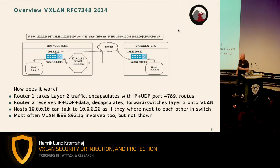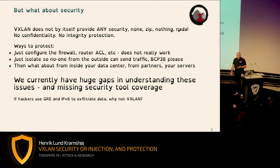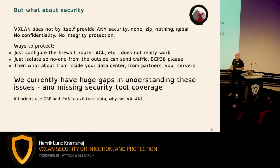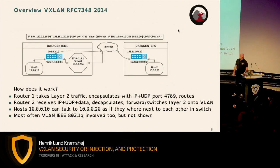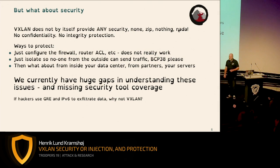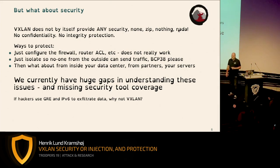What about security? VXLAN encapsulates in UDP. The worst thing about VXLAN is that it by itself provides no security — no encryption, no confidentiality, no integrity protection. It's just a UDP packet with some data. If you want to protect your network, you need to ensure only data from Data Center 1 can reach Data Center 2. You can try a firewall or router ACL allowing only packets from the known IP, or try to isolate the traffic so nobody from the outside internet can reach your devices.